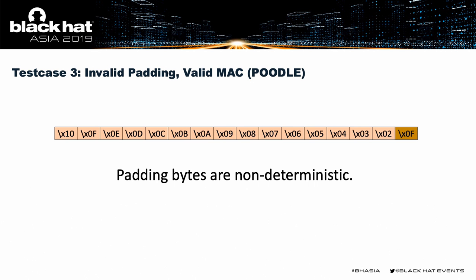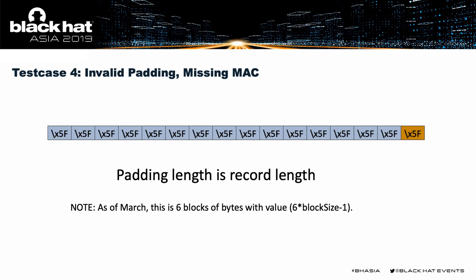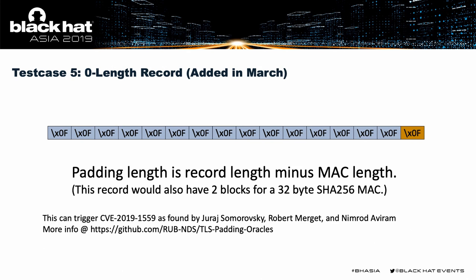Test case four has a missing MAC — the padding length is exactly the length of the record. Initially I did just the last block, but with increased knowledge of BEAST, I expanded this so that all blocks have this value, making it actually valid padding rather than incomplete padding. The fifth test case I can't really take credit for — it came from Jure Samarovski, Robert Mergett, and Nimrod Avram, who I collaborated with. The idea is a zero-length record: leaving enough data that there is a MAC and padding, but nothing else. This can trigger problems with certain OpenSSL builds.